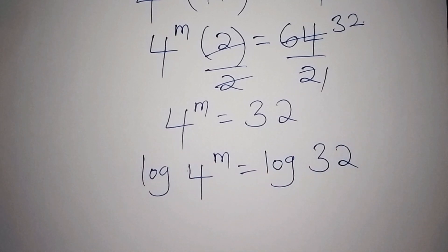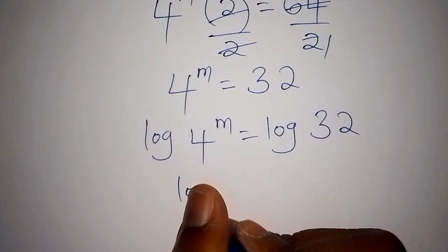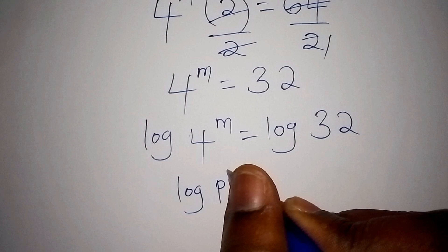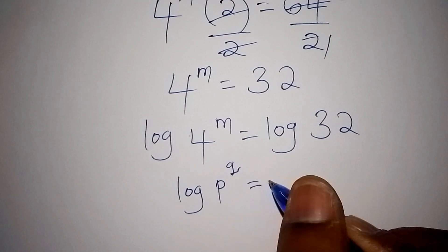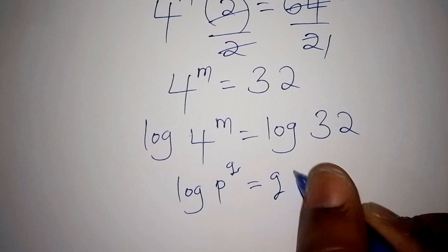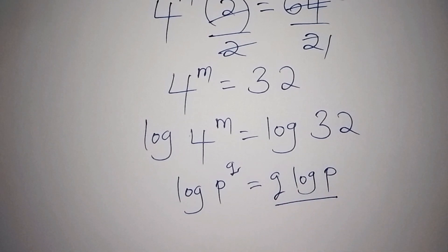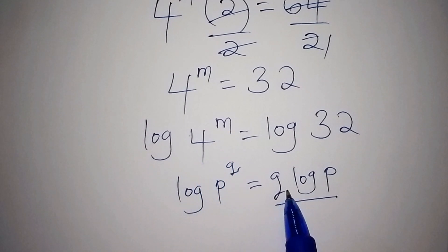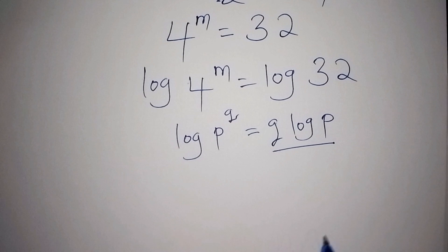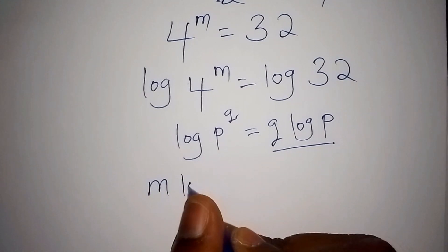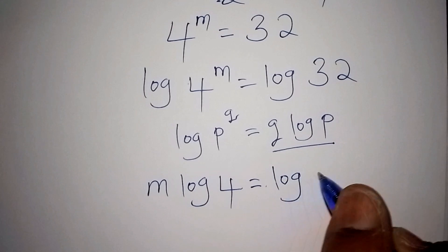We have just introduced the log on both sides. Now, recall that the log of p to the power of q can be rewritten as q·log p. So let us express log of 4 to the power of m in that form: m·log 4 equals log of 32.